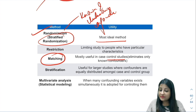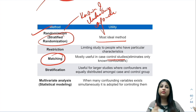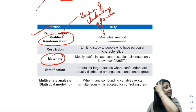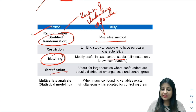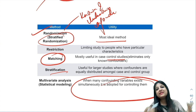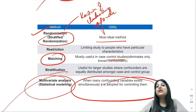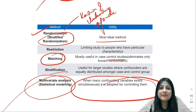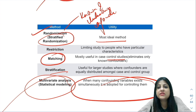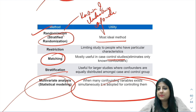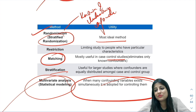Restriction is another method — for example, if I know smoking is a confounder, I can restrict my study to only non-smokers. Then you have stratification, and when there are various confounders in a study, we use a regression model — multivariate analysis. Remember: blinding for bias, not for confounders.